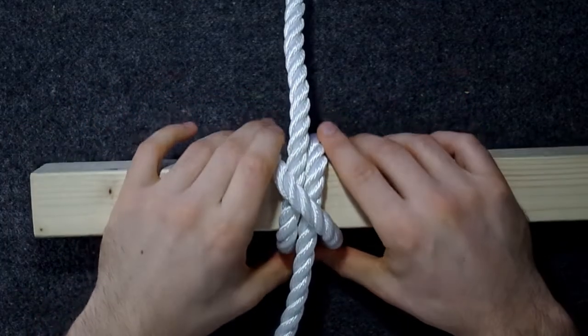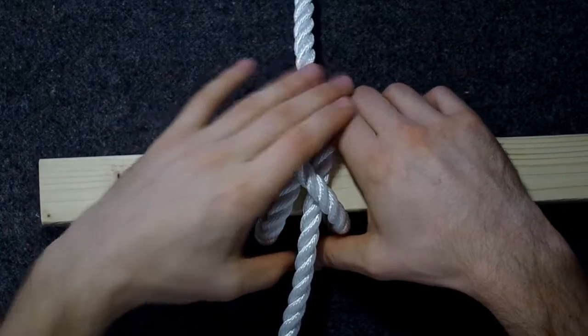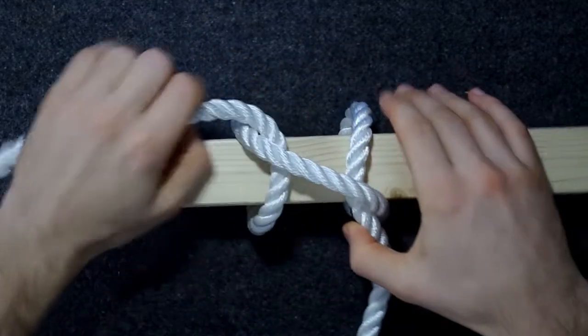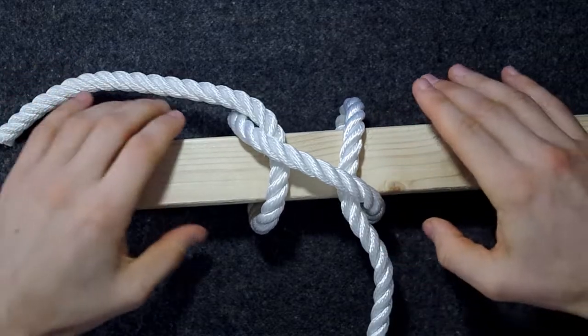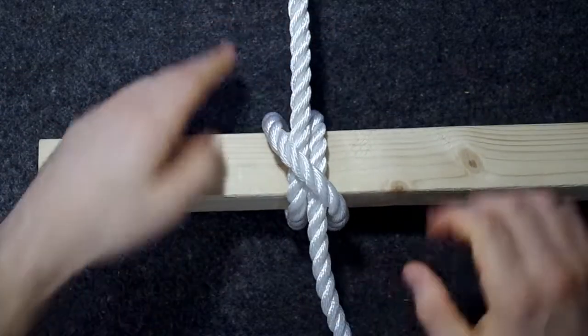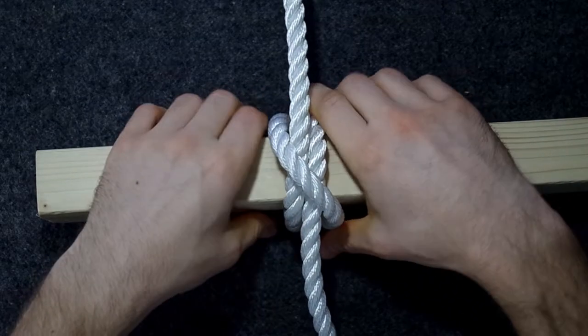A clove hitch is basically just two half hitches. If I pull this apart a little bit like this, it's basically just two half hitches. In Swedish it's actually called a double half hitch, which I find a more appropriate name.